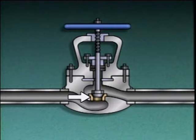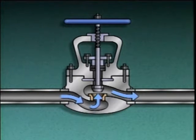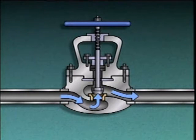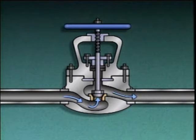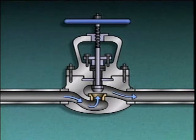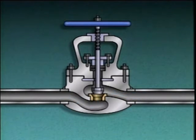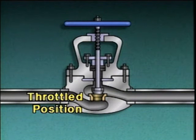The seating area or seat is a stationary part of a valve. It's used with the disc, which is a movable part, to control flow through the valve. As the disc moves toward the seat, flow through the valve is reduced, and when the disc presses against the seat, flow is stopped. As the disc moves away from the seat, flow increases until the disc reaches its limit of travel — at this point the valve is fully open. When a valve is partially open, it is said to be in a throttled position.